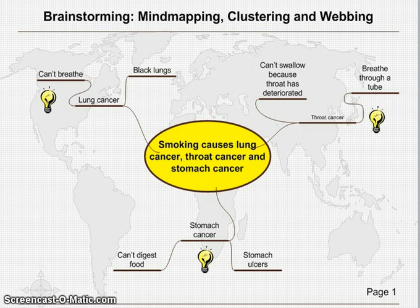This is called brainstorming, in which you sit down and just free-write everything you think you know about the topic. So let's say I choose smoking, and I say to myself, okay, what do I know about smoking? Well, I know it stinks up the room, makes my clothes stink, it's not good for you because it causes cancer — teenagers think it's glamorous. After I write all of these things down, then I want to organize what I want to say.